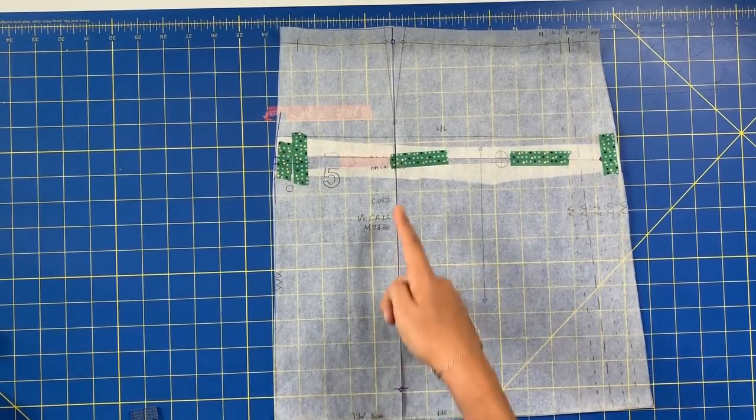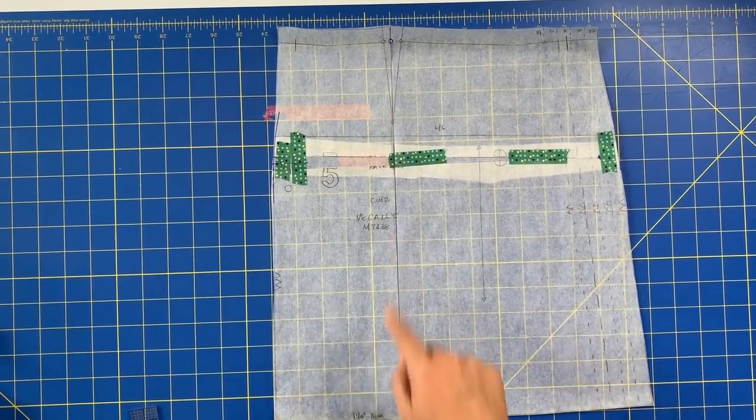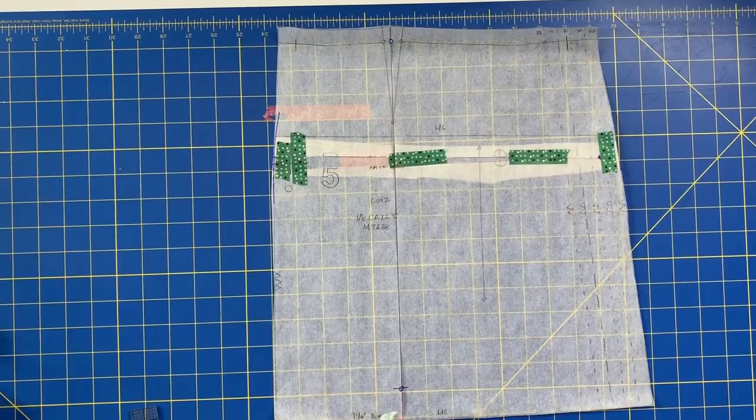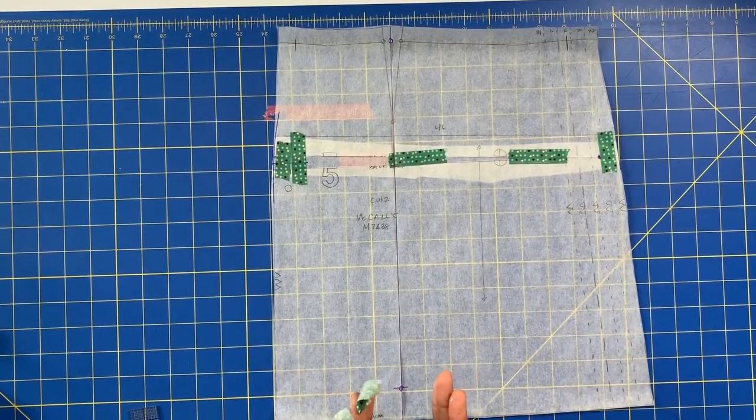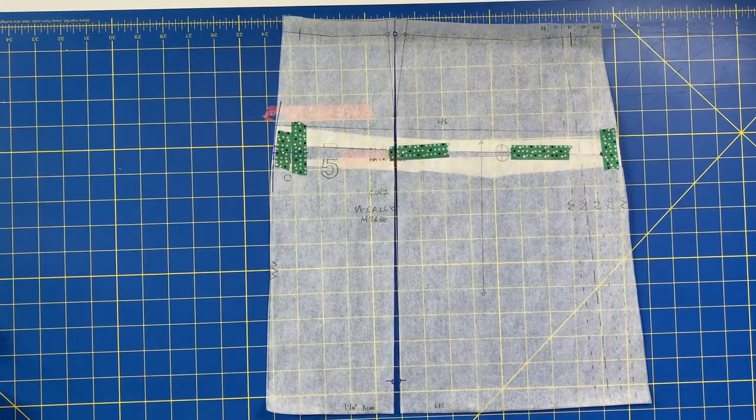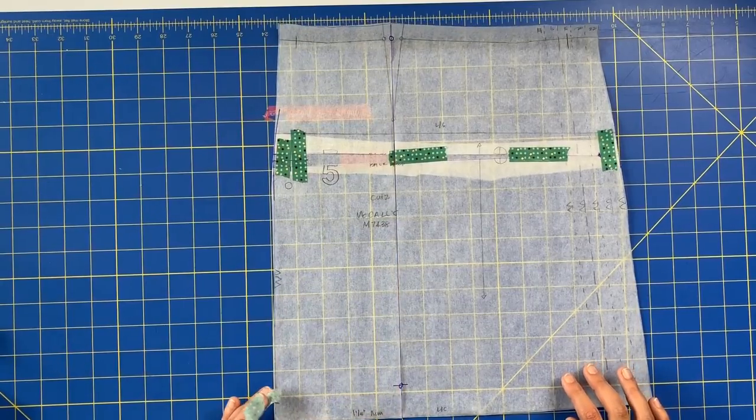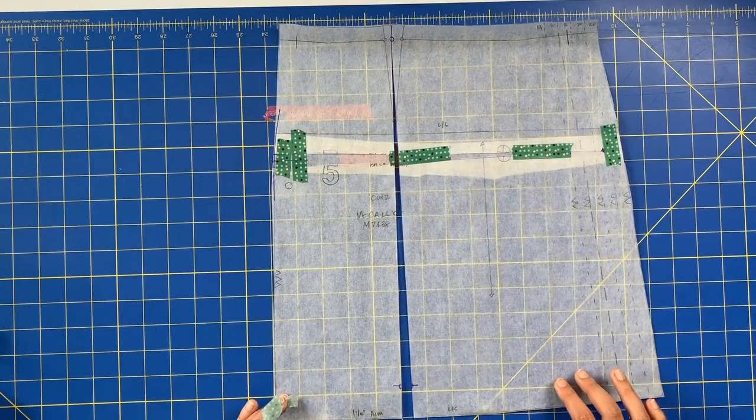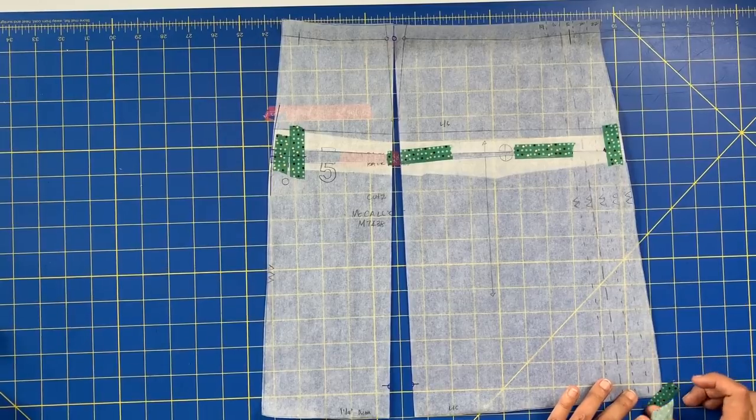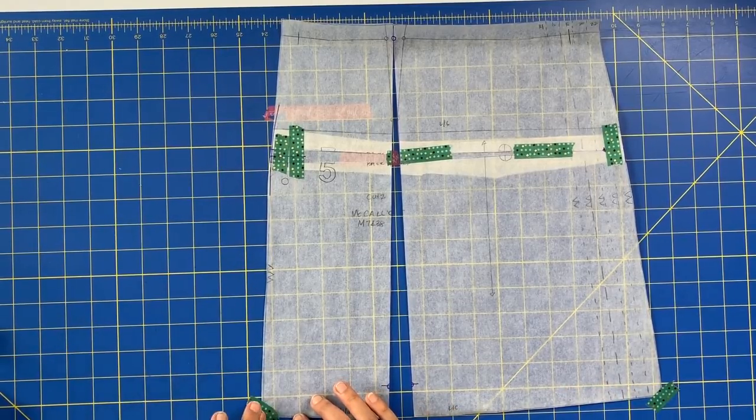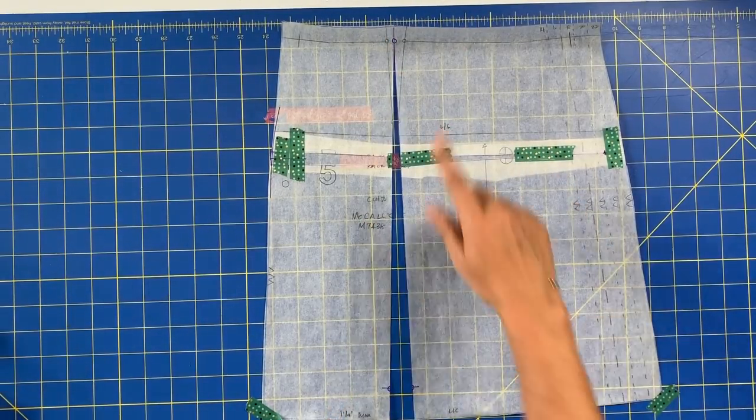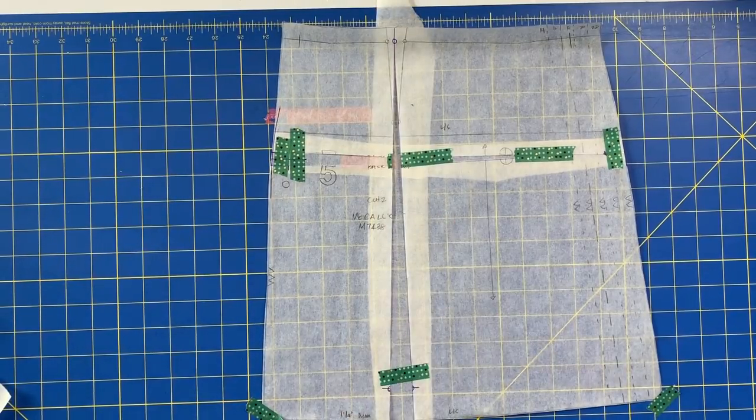Now line up that line you just cut with one of the grid lines on your cutting mat. If you want to make your skirt more A-line and make it one inch wider, pull these apart by a half an inch on each side. Scoot this one out to half an inch, scoot this one out to half an inch, then tape down your corners so they don't move. You can see it's created this little wedge all the way through the pattern.